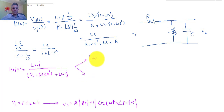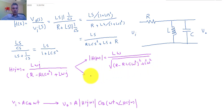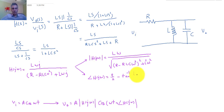The magnitude of H(jω) is the magnitude of the numerator, Lω, divided by the magnitude of the denominator, which is the square root of the real part squared — (R − RLCω²)² — plus the imaginary part squared, L²ω². The phase of H(jω) is the phase of the numerator, which is π/2, minus the phase of the denominator, which is arctan of the imaginary part Lω divided by the real part R − RLCω².